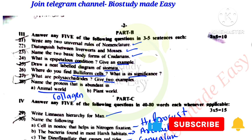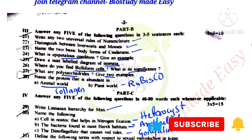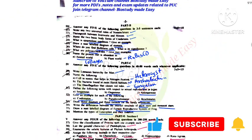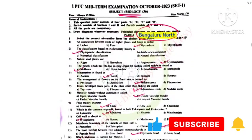The most abundant protein in the plant world is RuBisCO. These were all the questions of the Bengaluru North District question paper. Stay connected, happy learning, and all the very best, my dear students.